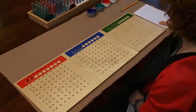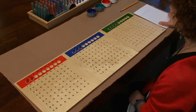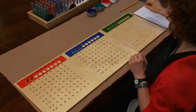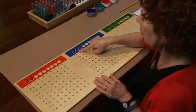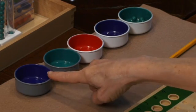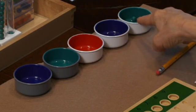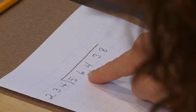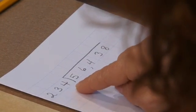This is test tube division with a three-digit divisor and recording all the work. Here's my divisor, 234. My dividend, 56,438. 56,438 divided by 234.